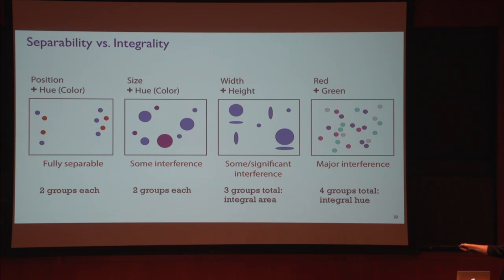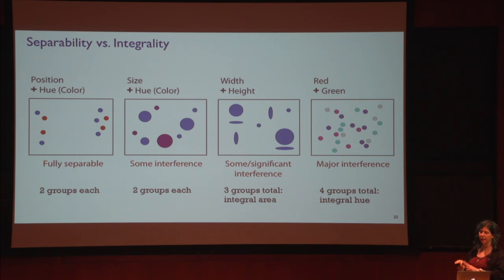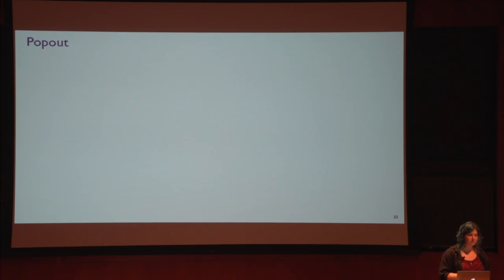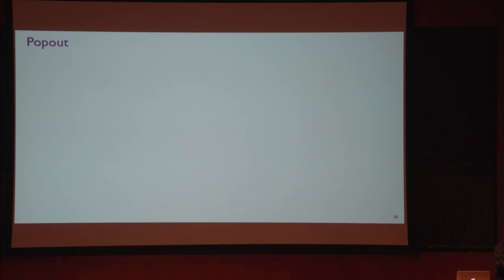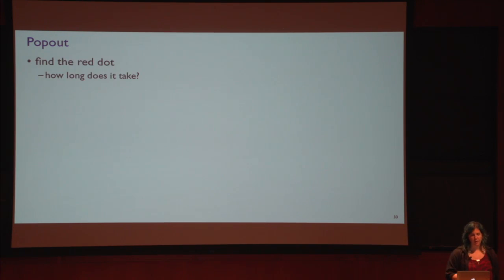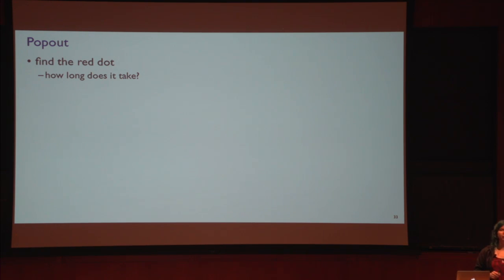The lovely but not-as-common case is having completely separable channels. In fact, there is quite a bit of interference between channels, so you can't just completely separately encode everything. Now let's think about pop-out — another important phenomenon related to what the human brain does non-consciously versus consciously. I'll ask a simple question: find the red dot. And when you find it, say something out loud. Not too hard hopefully. Notice how it didn't really take much longer with lots of distractors versus just one distractor.